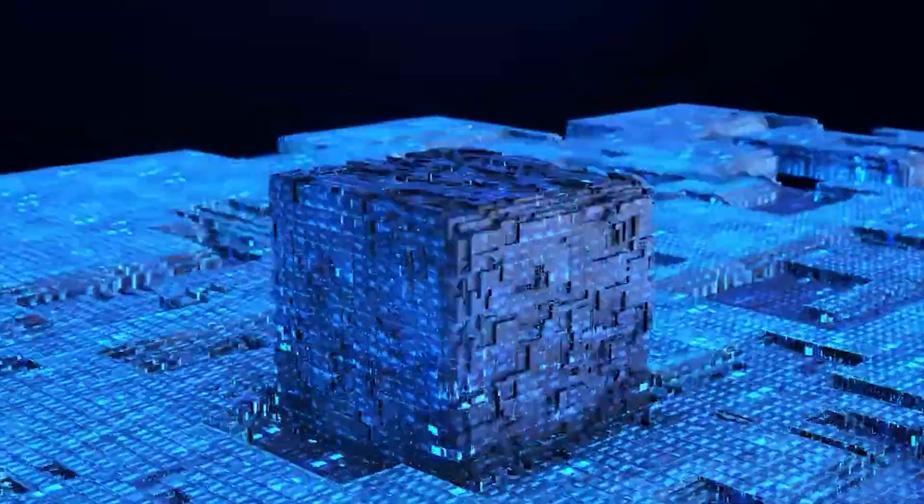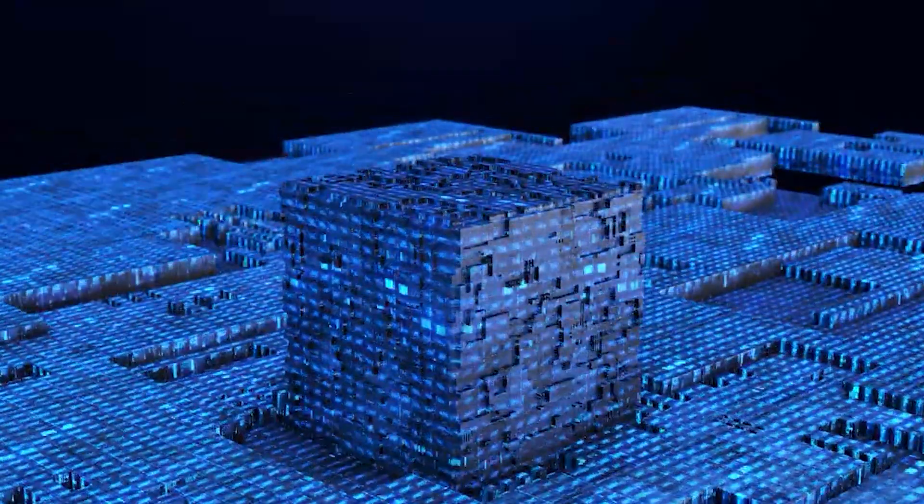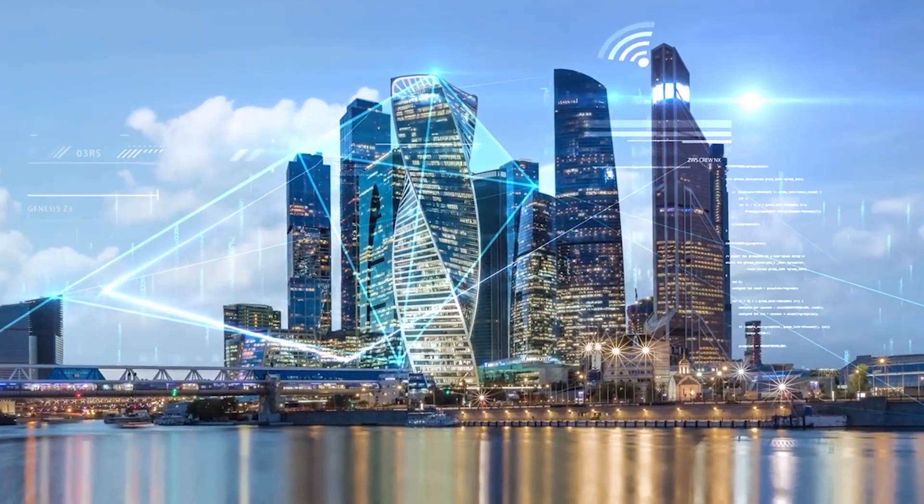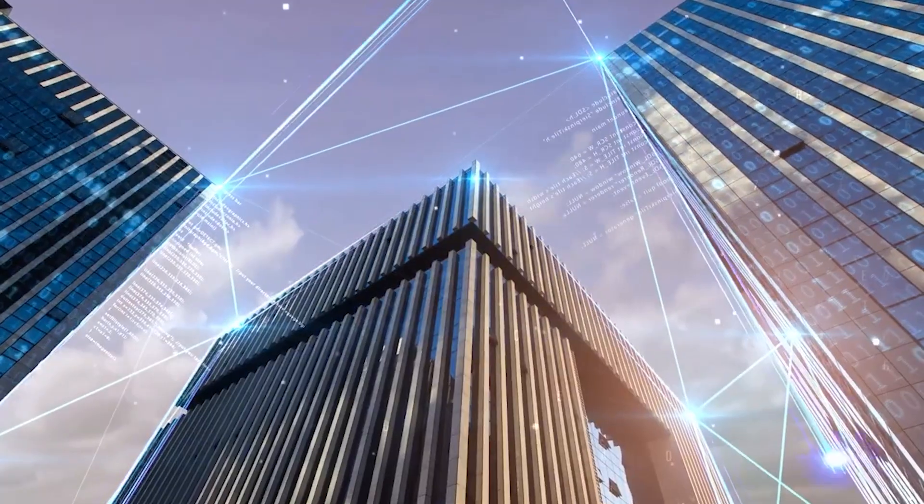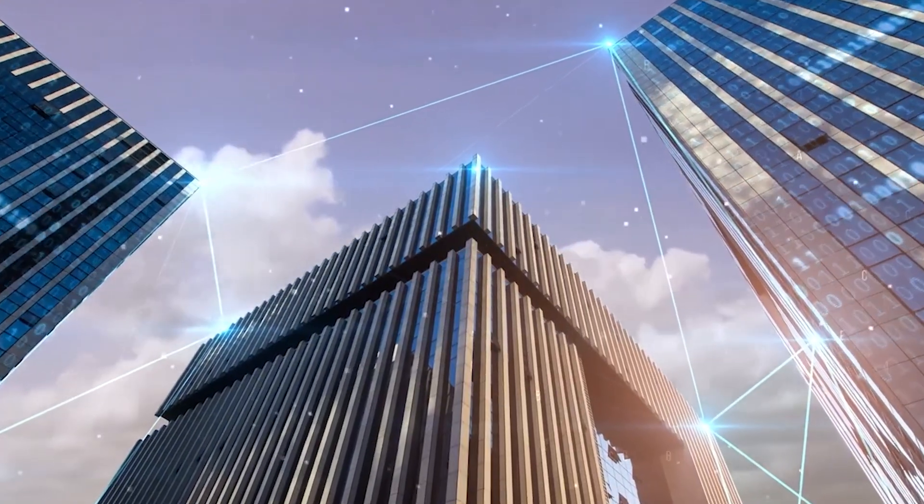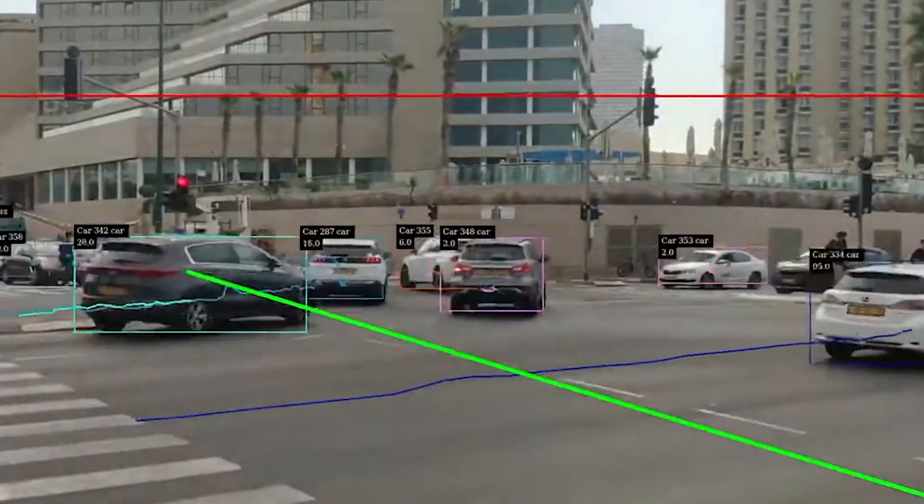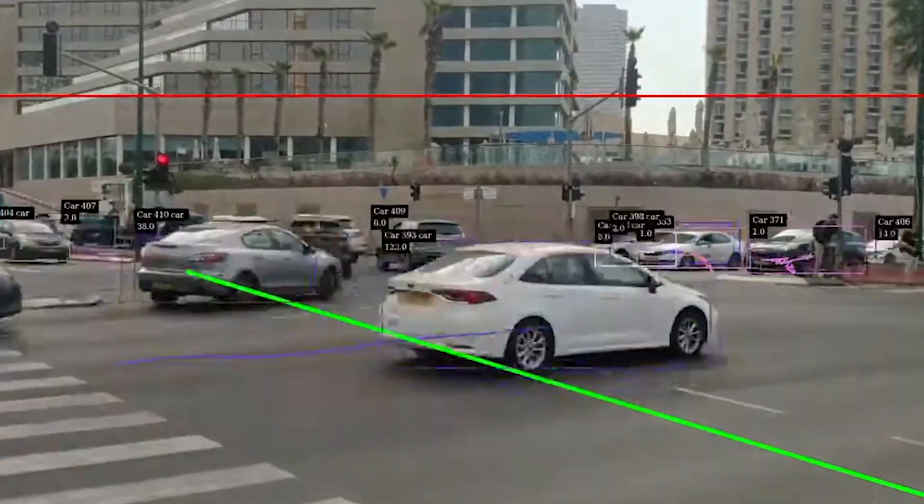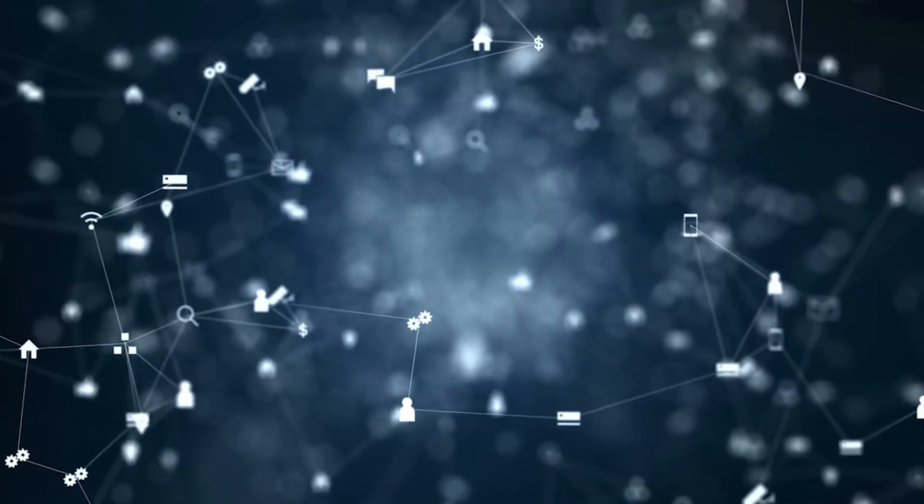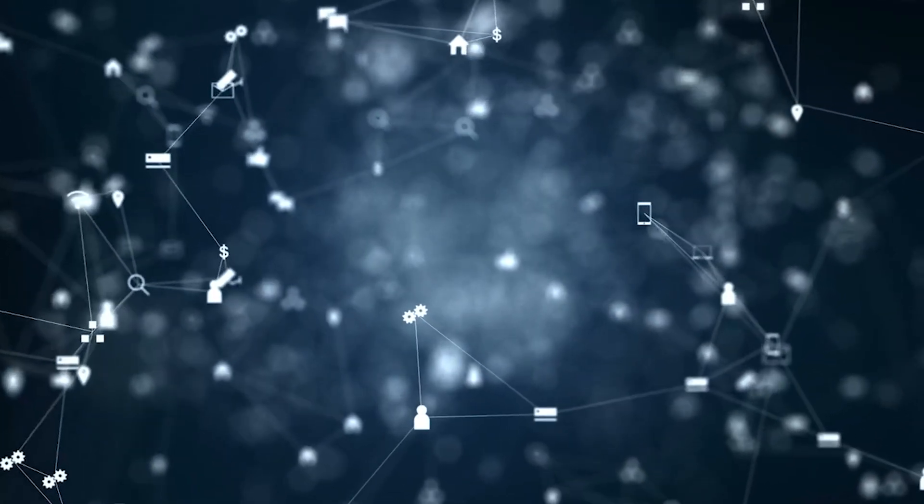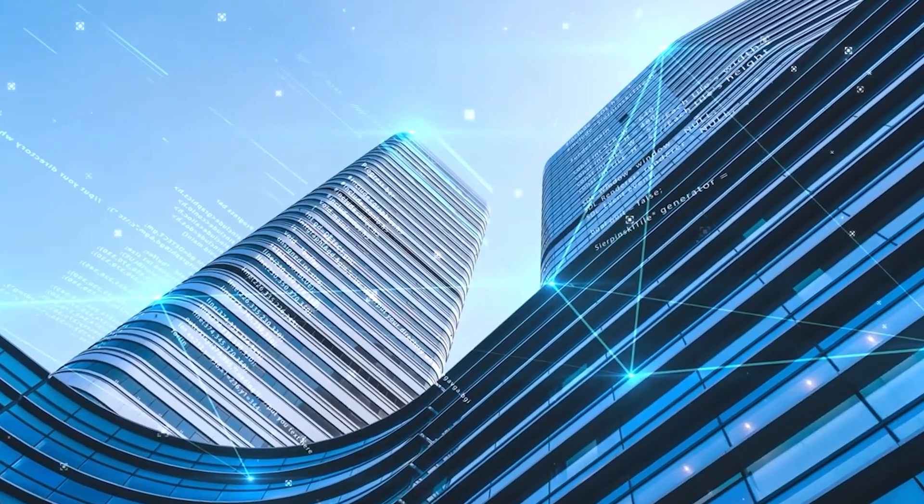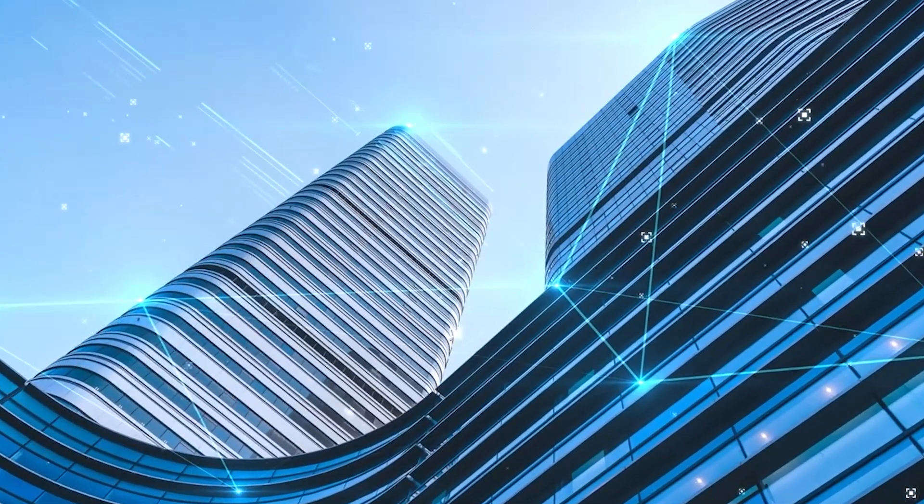The vision is cities as living organisms, constantly sensing conditions, processing information, and adapting operations to optimize countless variables simultaneously. As urban populations continue concentrating, with over 70% of humanity expected to live in cities by 2050, this intelligence becomes essential rather than optional for maintaining livable environments at unprecedented population densities.